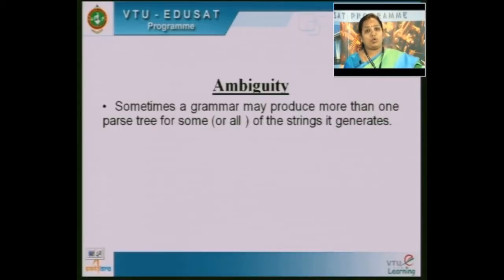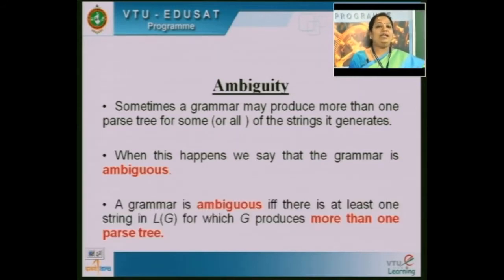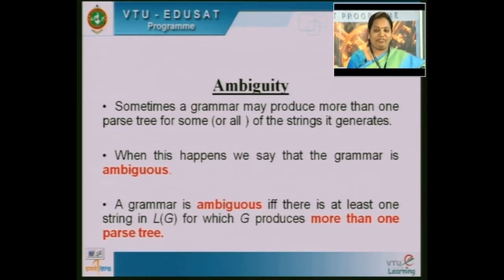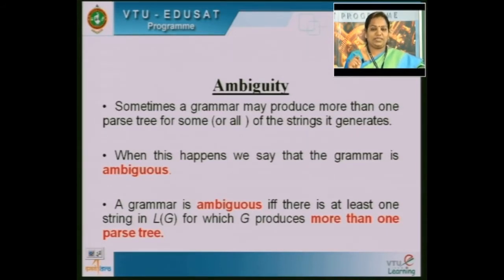Sometimes a grammar may produce more than one parse tree for the same string it generates. When this happens, we say that the grammar is ambiguous. A grammar is ambiguous if and only if there is at least one string in the language L of G for which G produces more than one parse tree. If the grammar produces more than one parse tree for a given string, that grammar is called an ambiguous grammar.